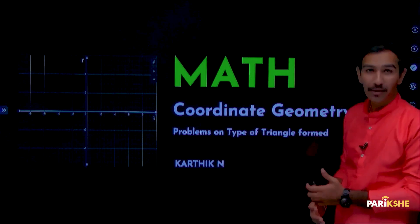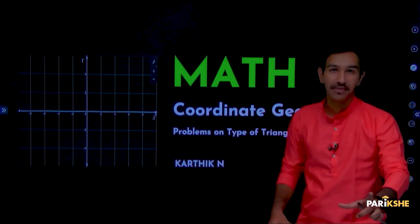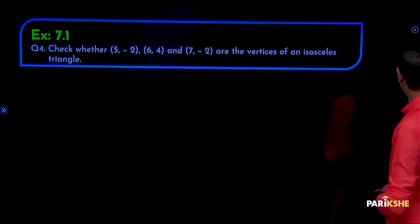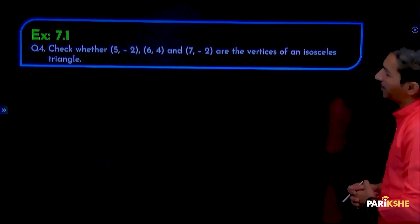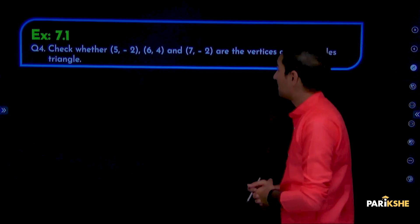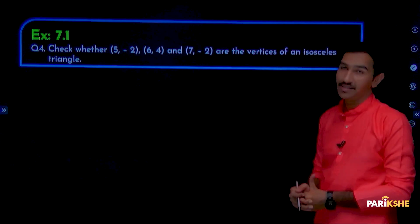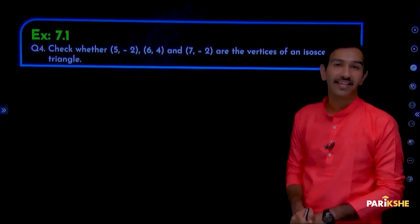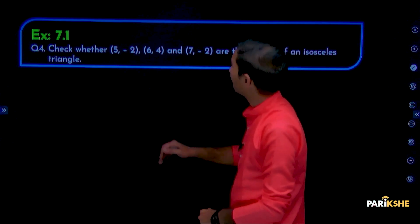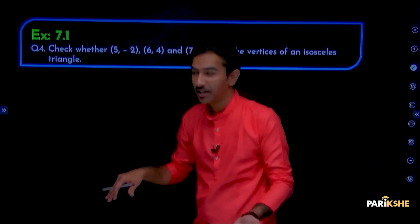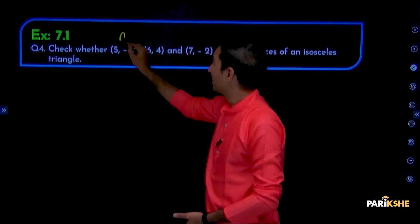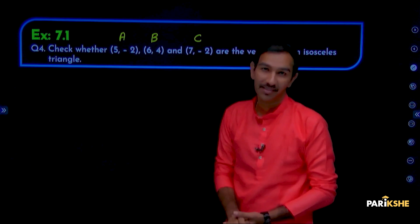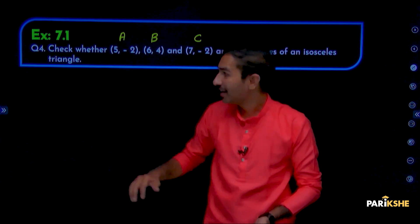So, on these types of triangles, using Coordinate Geometry, we will solve problems. The first problem: Check whether the points (5, -2), (6, 4), and (7, -2) are vertices — vertices means points — of an isosceles triangle. Let us name them A, B, C. So A, B, and C are the three points respectively. We need to check if this forms an isosceles triangle.